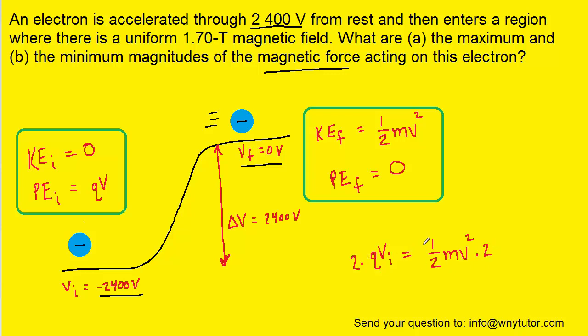So that way, on the right side, we can cancel out the one-half. We can then divide by the mass on both sides of the equation. And then we can take the square root of both sides, and that way we can have just v on the right side.